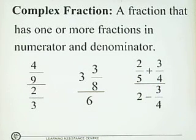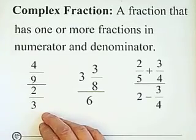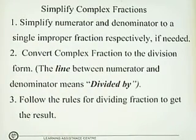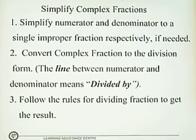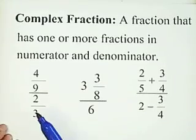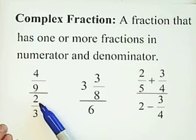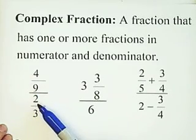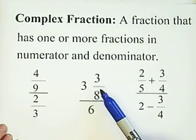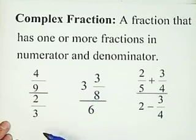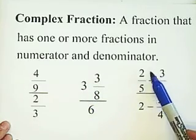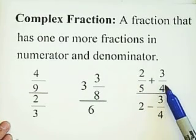So how do we simplify complex fractions to get the answer? I'll show you some examples, but first there are three steps to follow. The first step is to simplify the numerator and denominator each into a single improper fraction, if needed. Looking back at these three examples: 4/9 and 2/3 are already single fractions, so we don't need to do any simplifying before step two. For the second and third examples, we need to simplify to a single improper fraction — adding or subtracting as needed.